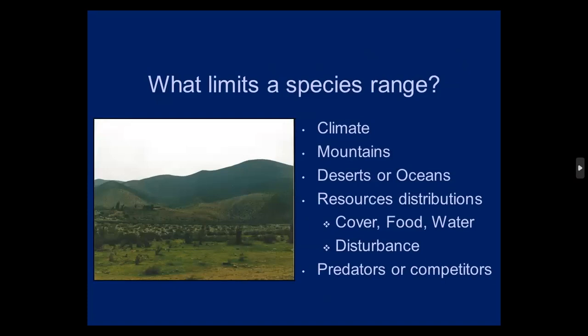What limits a species' range? Climate — is it too hot or too cold? Mountains — is it too high and too cold? As you go up in mountains it gets colder. Deserts often limit species distribution — something may live north, south, east, or west of a desert but not within it. Oceans restrict a species from getting from one place to another. Resource distributions — where is their cover, food, and water, and has it been disturbed? Clearing of forest or native desert habitat can affect a species' range.